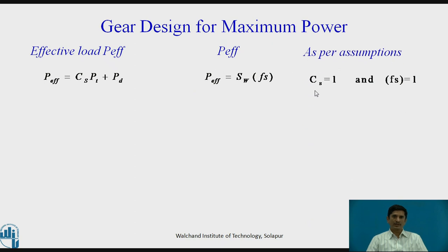As per the assumptions, we know that CS equals 1 and factor of safety equals 1. This equation becomes CS equals 1, p-effective equals PT plus PD. As the factor of safety is 1, this equation is simplified and p-effective equals SW. From these two equations, we can say that SW equals PT plus PD. Or in other words, PT equals SW minus PD.